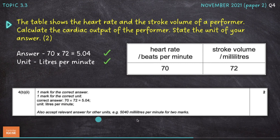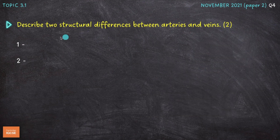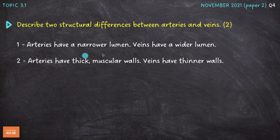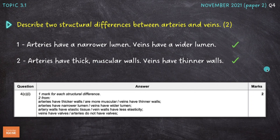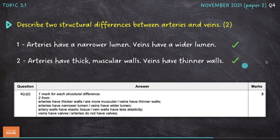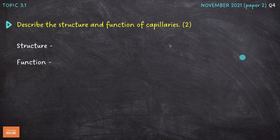Next question: describe two structural differences between arteries and veins. First, arteries have a narrower lumen than veins, which have a wider lumen. Second, arteries have thick muscular walls, whereas veins have thinner walls. The mark scheme also accepts: artery walls have elastic tissue whereas vein walls have less elasticity; and veins have valves whereas arteries do not.